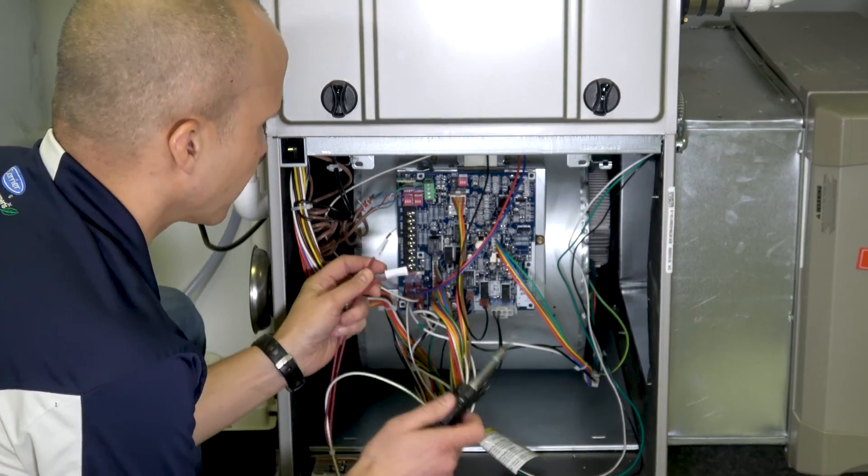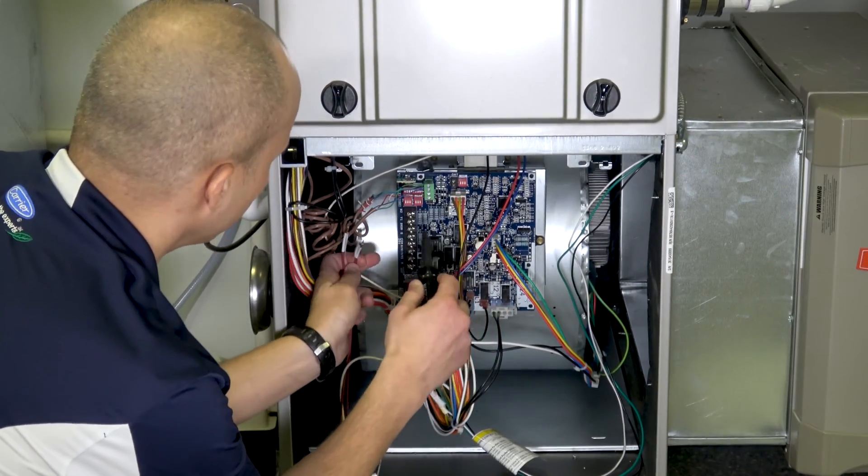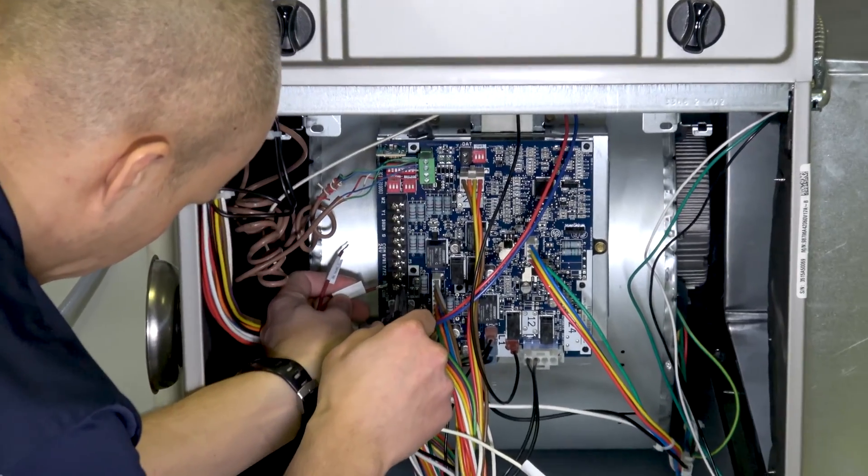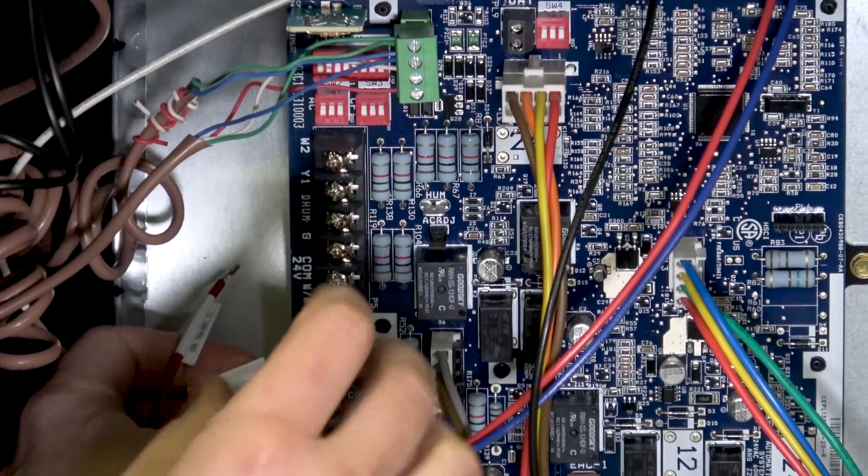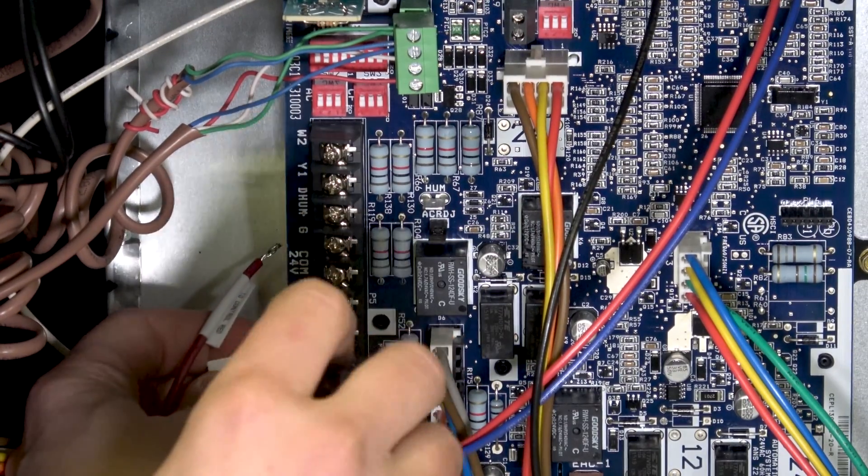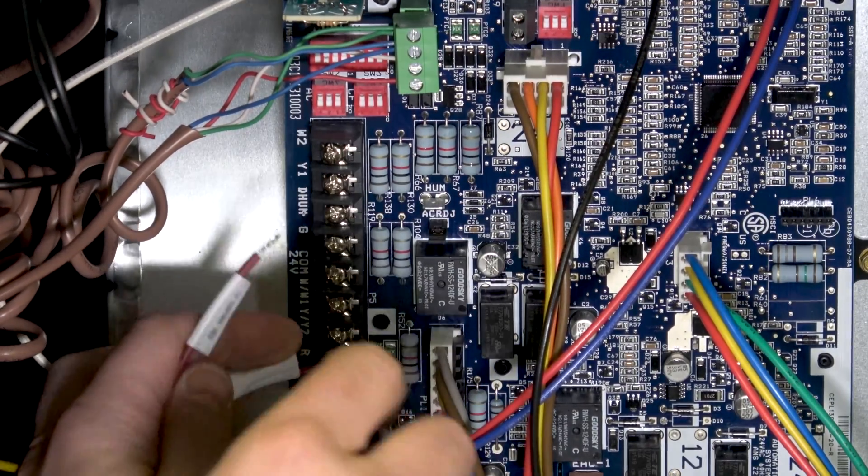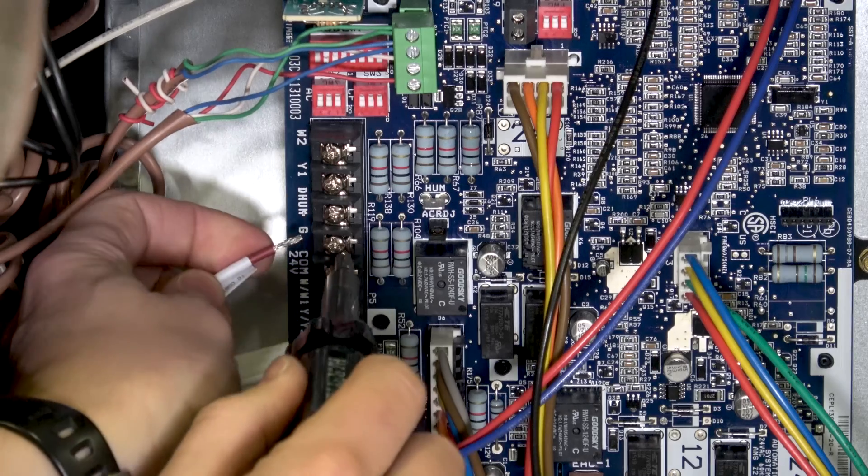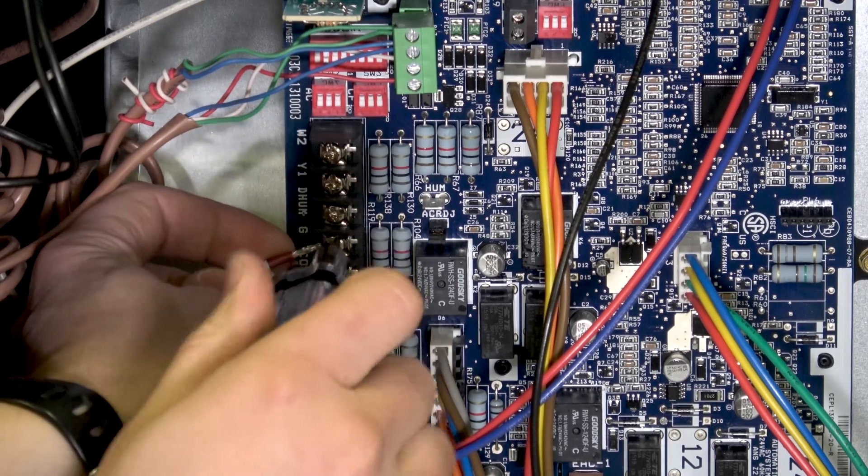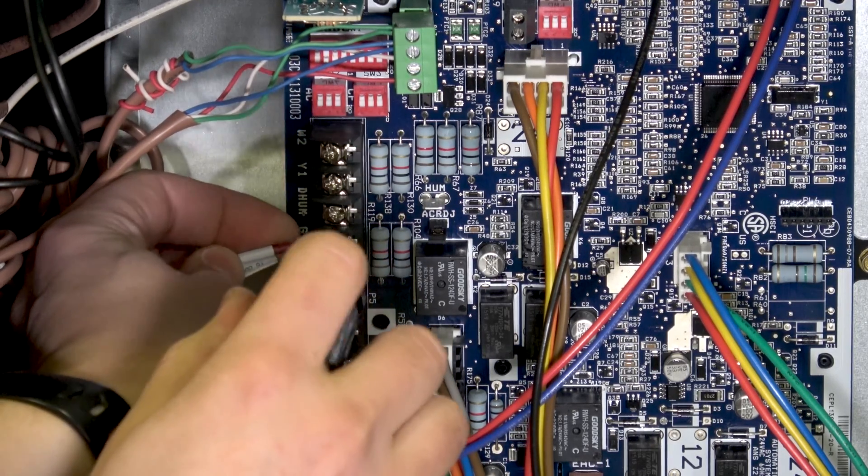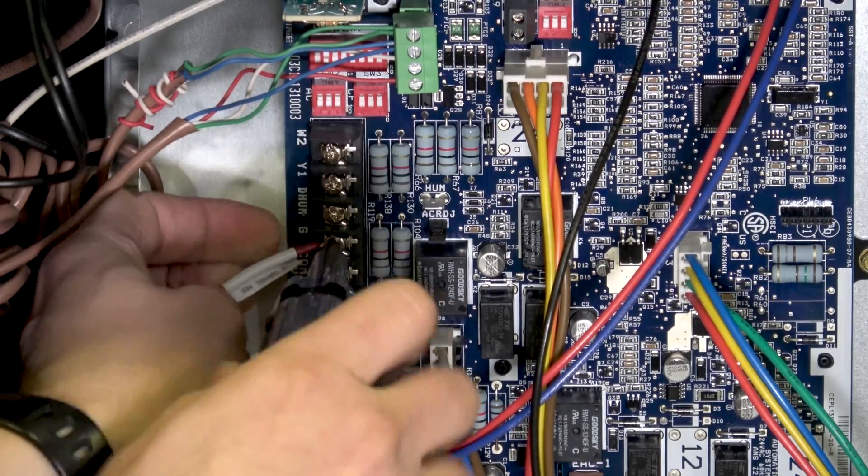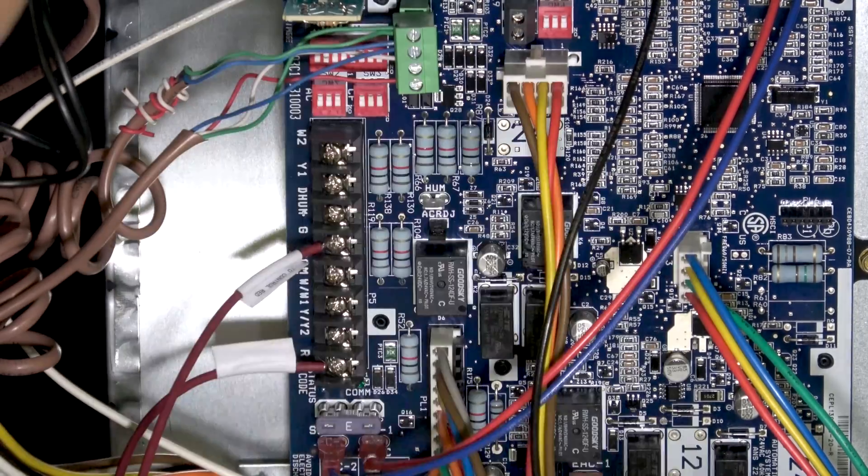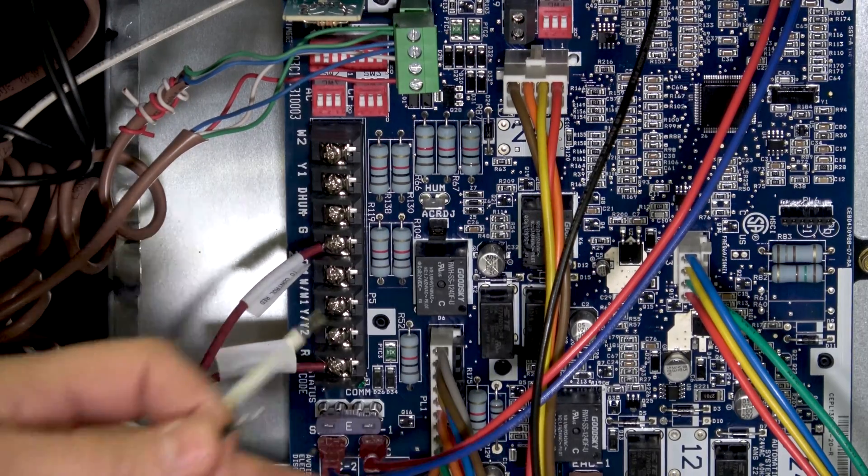Down here at the furnace we're going to take our two red contact wires and we are going to terminate them on R and onto G. That's no longer a fan signal on this particular application with these thermostats. That is a miscellaneous input. That's R and G.